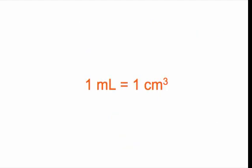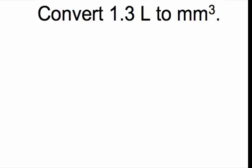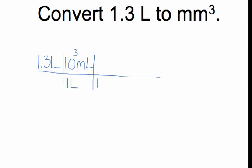Another key conversion factor: 1 milliliter equals 1 centimeter cubed. You need to use this when converting between milliliters and centimeters cubed, both of which are volumes. The problem we'll work now is converting 1.3 liters to millimeters cubed. Start with 1.3 liters, convert to milliliters using 1 liter equals 1,000 milliliters, then apply the conversion factor 1 milliliter equals 1 centimeter cubed.